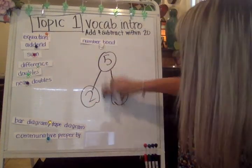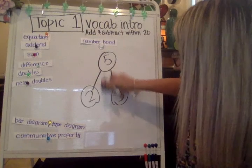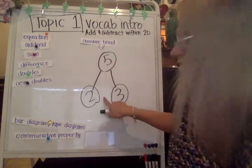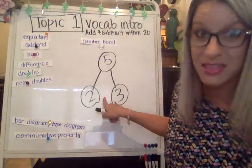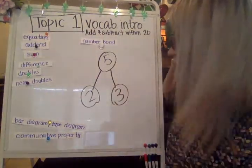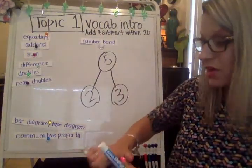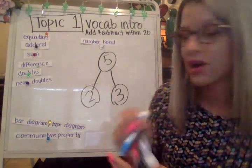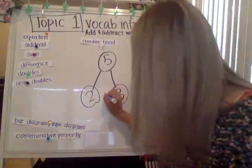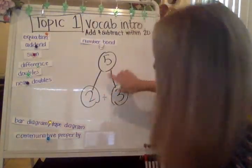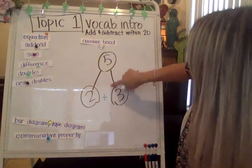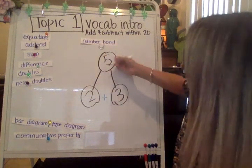On your number bond, you won't have a plus sign in there, but that is something I like to think about. So when thinking about the number bond, two plus the three — looking at these two lines right here, I'm imagining those are kind of like an equal sign.